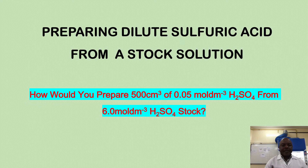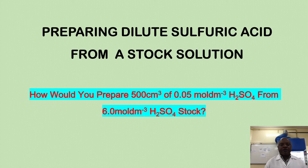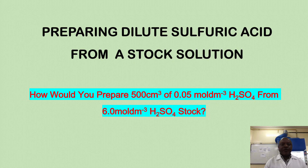Precisely, how would you prepare 500 cm³ of 0.05 mol per dm³ sulfuric acid from 6.0 mol per dm³ sulfuric acid?